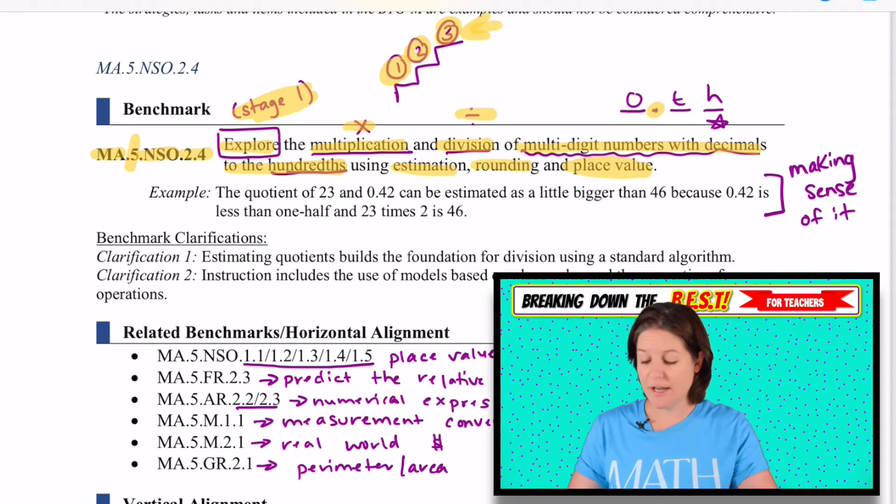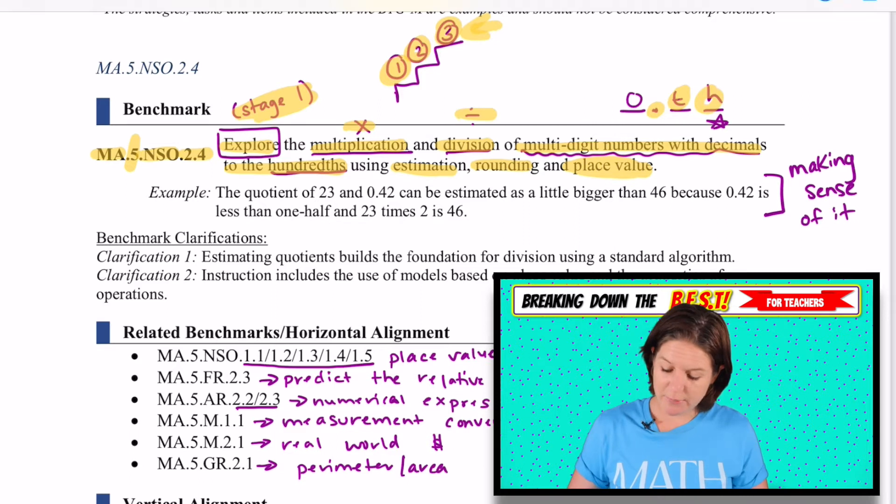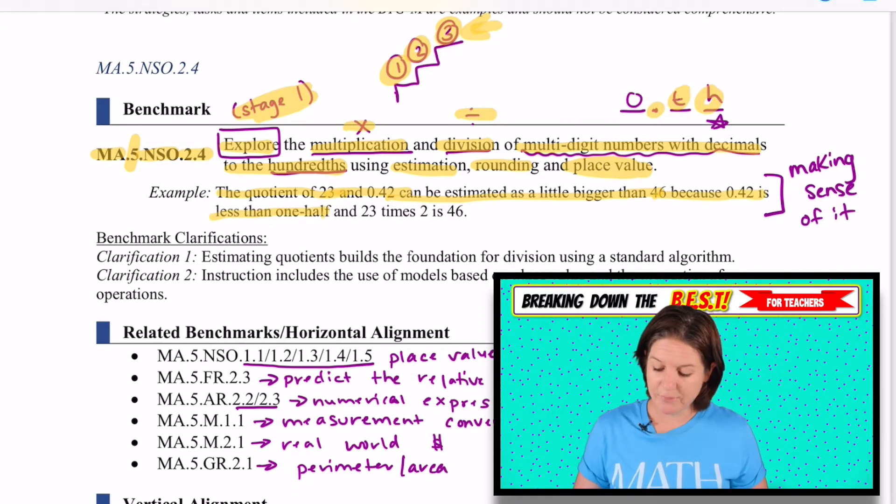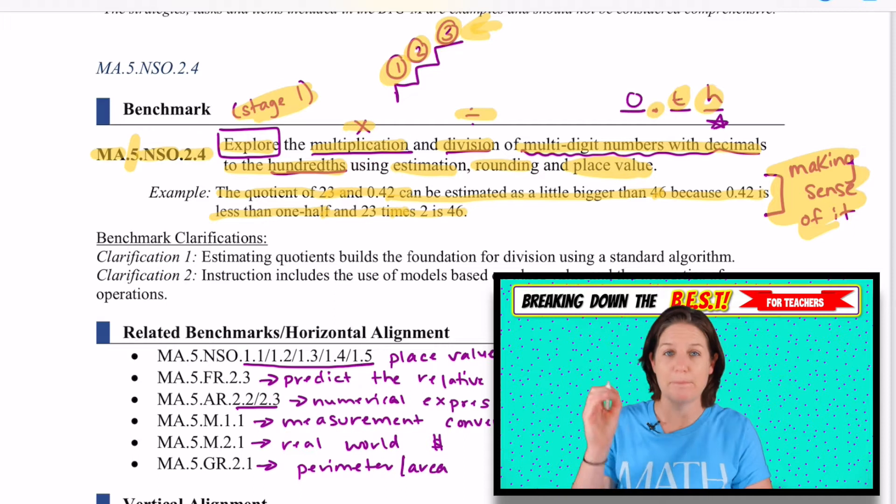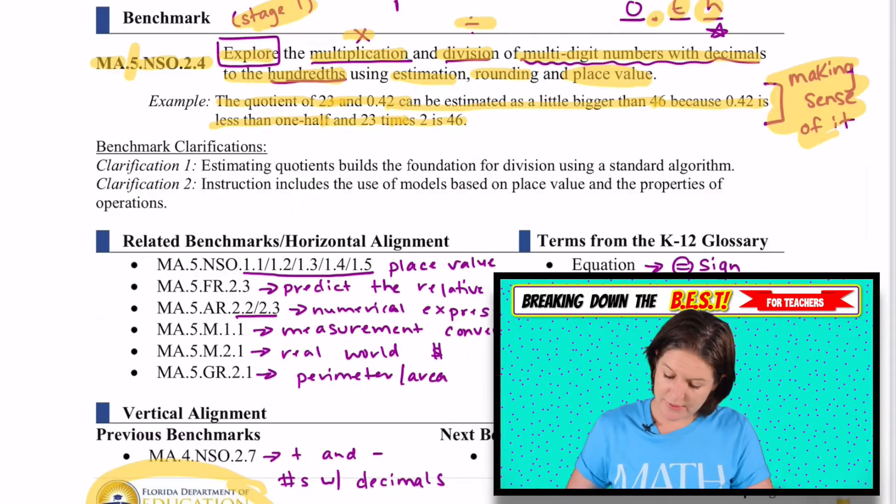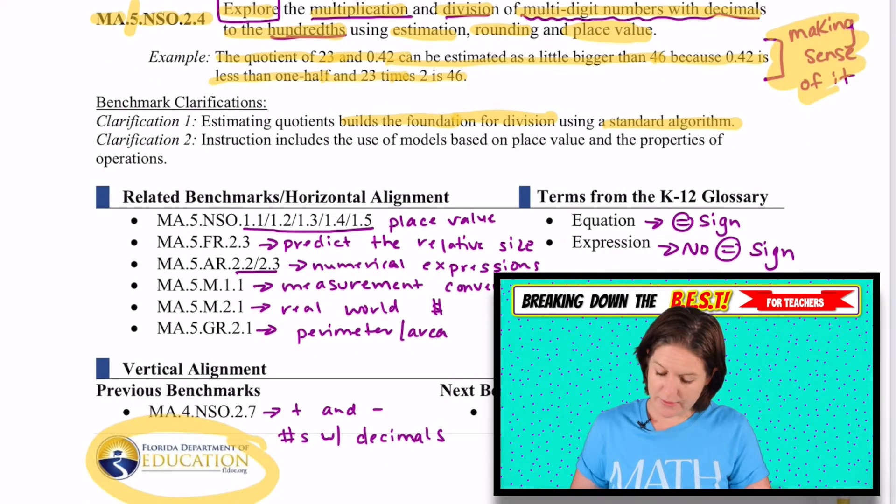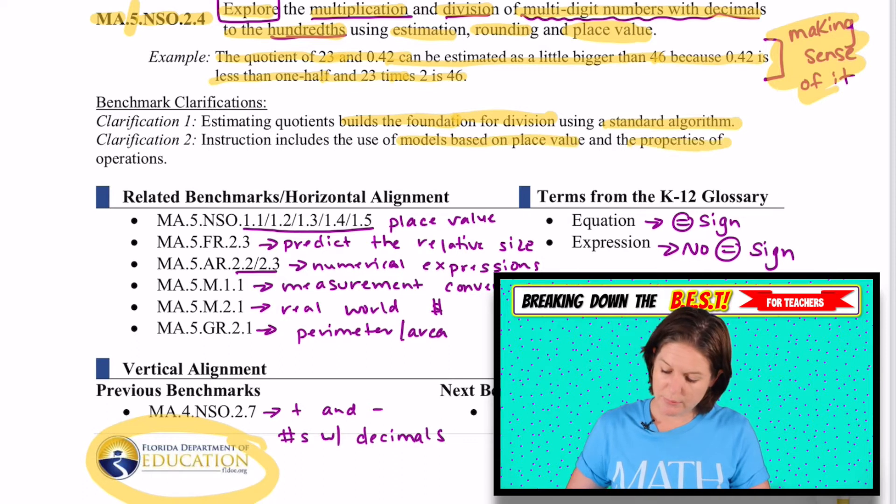It also said to the hundredths place, so we'll be multiplying and dividing to the hundredths place. I love this example right here. It says the quotient of 23 and 0.42 can be estimated as a little bit bigger than 46 because 0.42 is less than one half and 23 times 2 is 46. It's kind of just making sense of numbers, making sense of it. In the clarifications, it says this builds the foundation for standard algorithm with division, but we will not get to standard algorithm here. Instruction includes the use of models based on place value and the properties of operations.